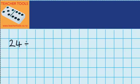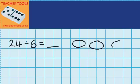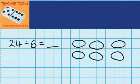24 counters shared between 6 groups — I want to know how many counters will be in each group. Let's just draw a picture to see what that would look like. I have 6 groups, so I'll draw those over here. And you can see here that I've got 24 counters, so I need to find a way of sharing those 24 counters into each of these groups.